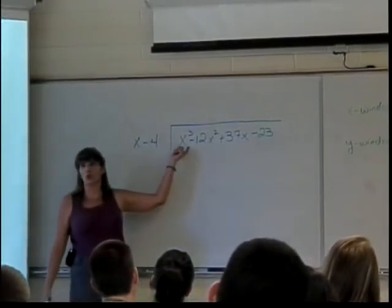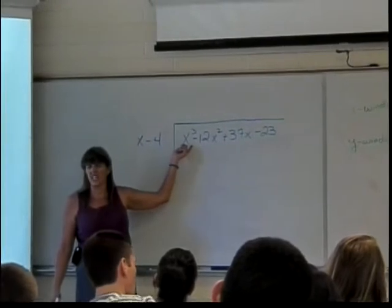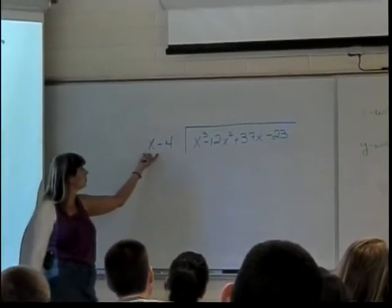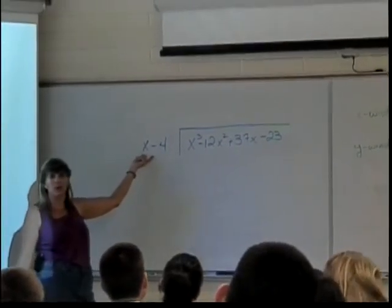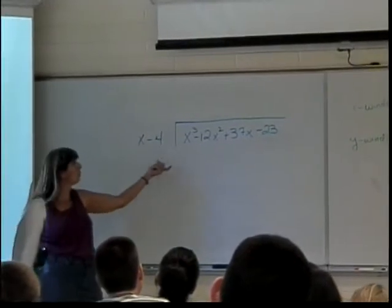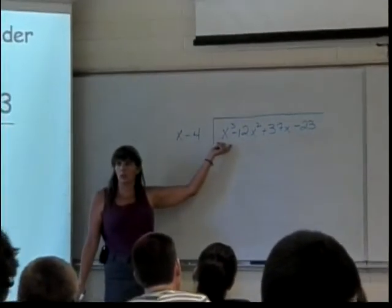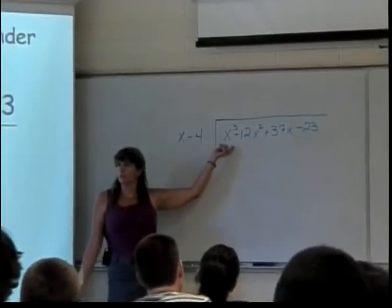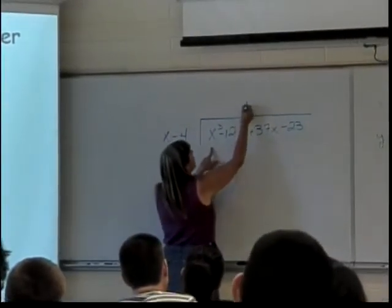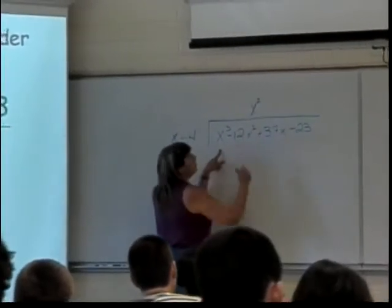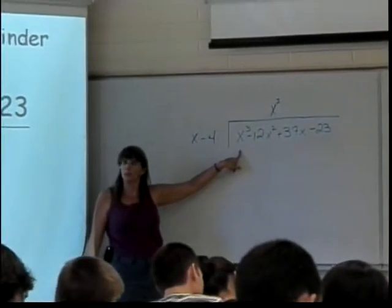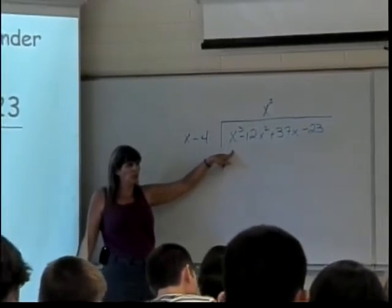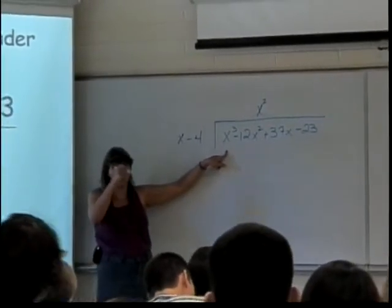You look at the first term in your dividend and look at your first term in your divisor and see what you need to multiply the divisor by. Just this term to get the X cubed in this case. What do I need to multiply by? X squared. I personally like to line mine up. You don't have to. Unlike numbers, it's not absolutely necessary because there's no decimal place going up there.